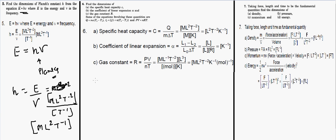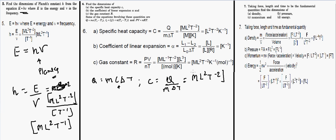For specific heat capacity, from Q = mcΔT, we get c = Q/(mΔT). Heat or energy has dimension ML²T⁻², mass is M, and temperature is K (kelvin). Overall, the dimension of specific heat capacity is L²T⁻²K⁻¹.